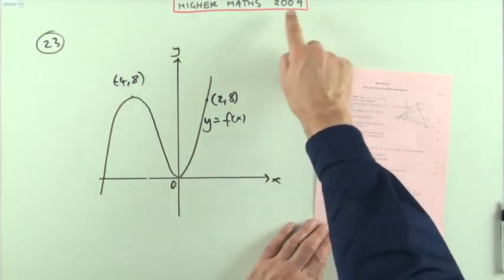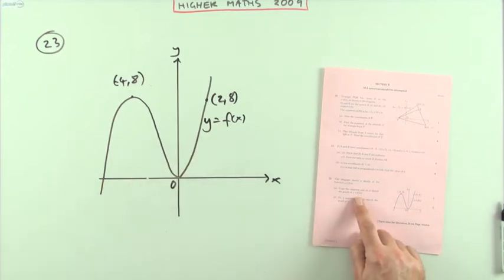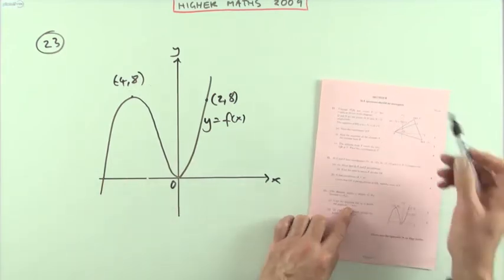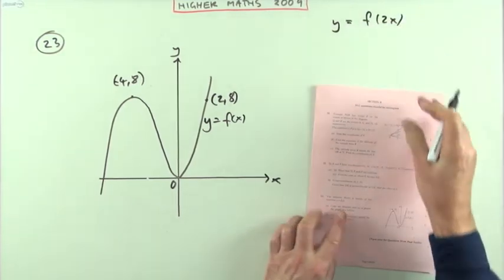Number 23 from the Higher Maths 2009 first paper. There's a sketch of a function f of x, you have to copy it, done it, don't think that was one of the marks, and then sketch the graph of this alteration to y equals f of 2x.